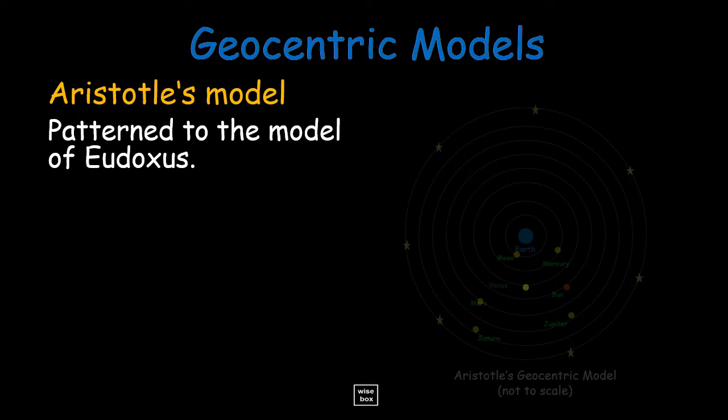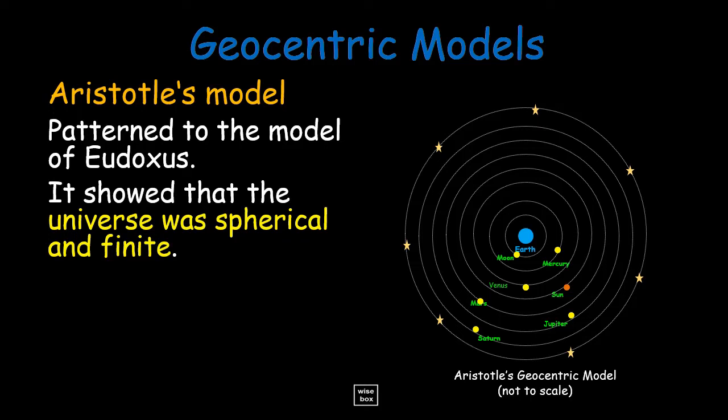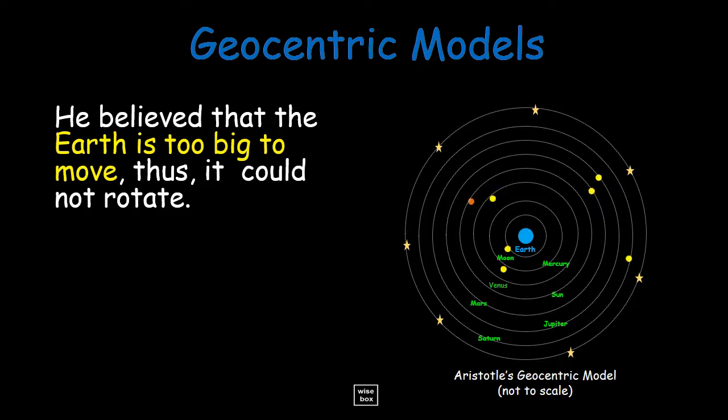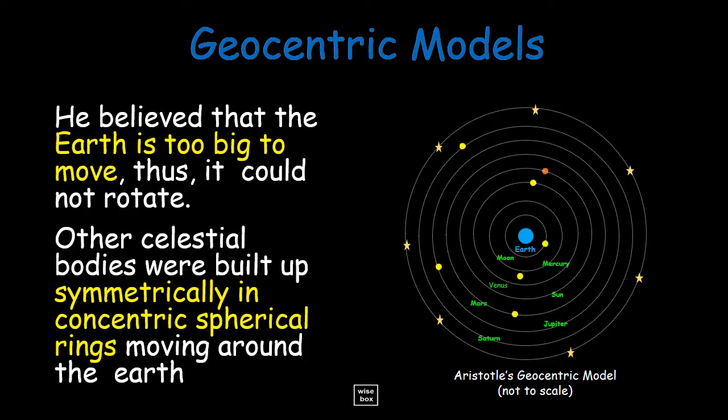Aristotle patterned his model for Eudoxus. It showed that the universe was spherical and finite. He also perceived that Earth was at the center of the universe and was stationary. He believed that the Earth is too big to move, thus it could not rotate. Other celestial bodies were built up symmetrically in concentric spherical rings moving around the Earth.